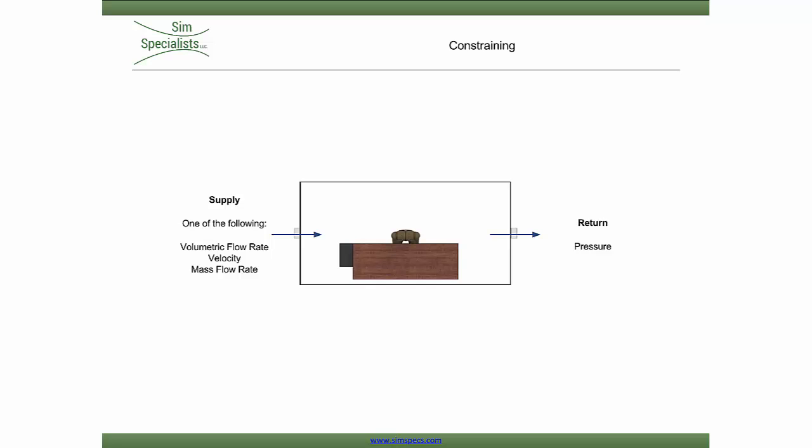Another example of a properly constrained model would be to define a pressure on both the supply and return. In this case, the mass flow rate would be an unknown that is solved for. This setup also requires a momentum source to drive flow in and out of the system. That momentum is typically provided by a fan or properly set up buoyancy parameters.